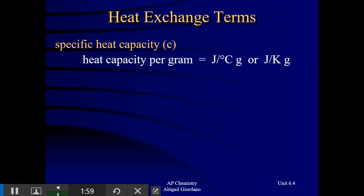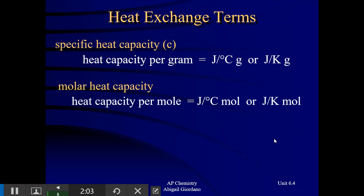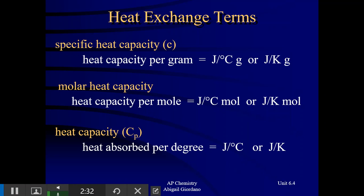There's also something called molar heat capacity. If you compare molar heat capacity to specific heat capacity, they're almost the same, except instead of changing the temperature of one gram of the substance, we're changing the temperature of one mole of a substance. Another one you might see — though it's used least often — is just called heat capacity, abbreviated with a capital C. The only difference is that the unit of grams is gone, so it's just joules per degree Celsius or joules per Kelvin.